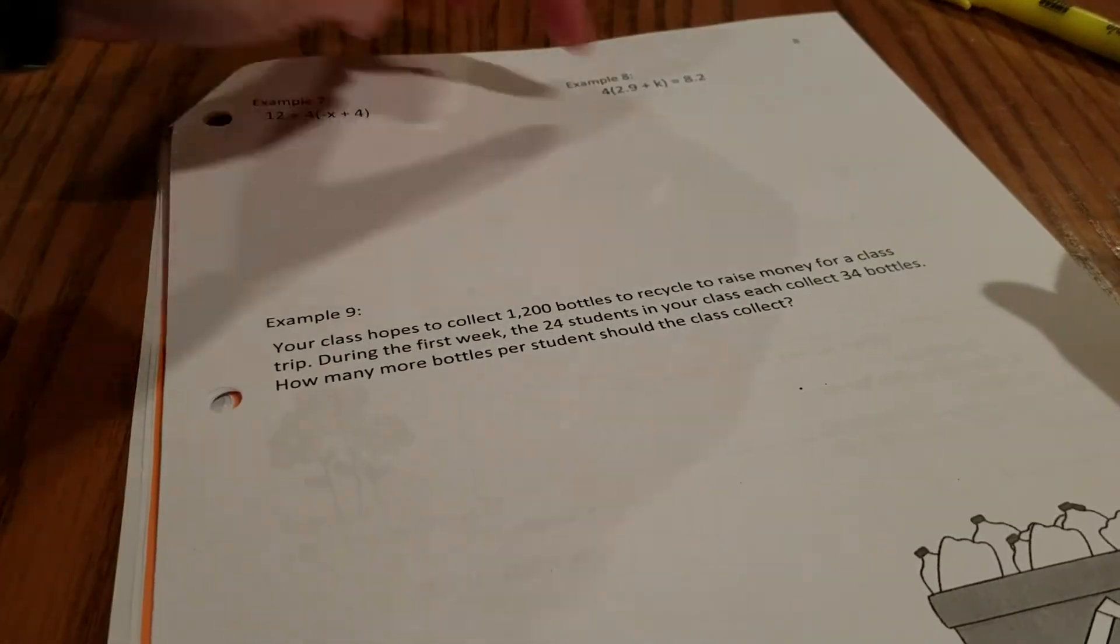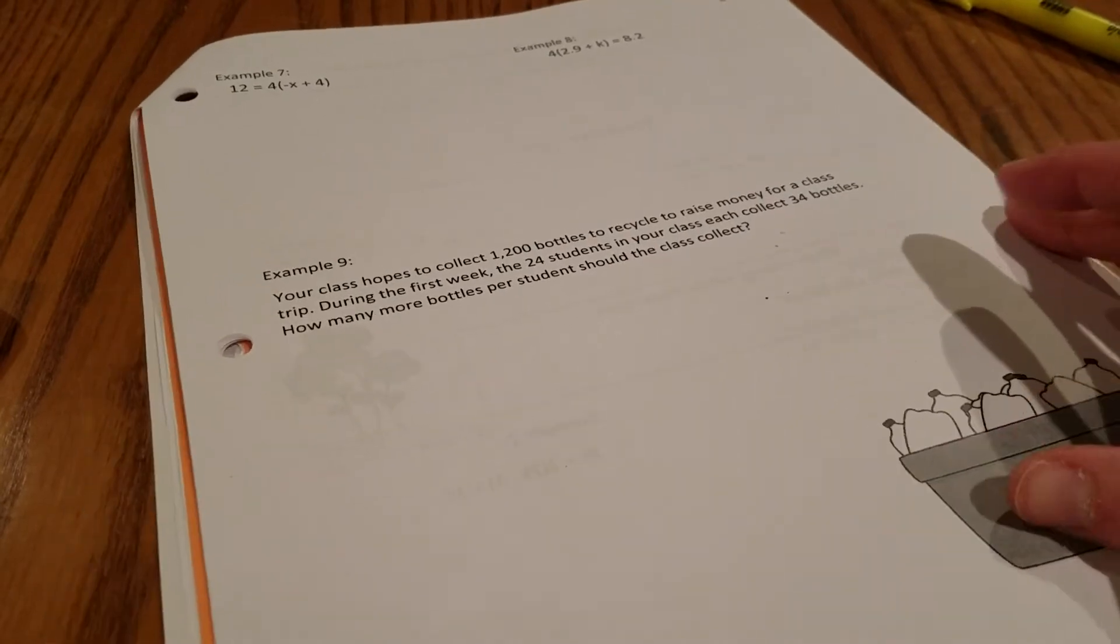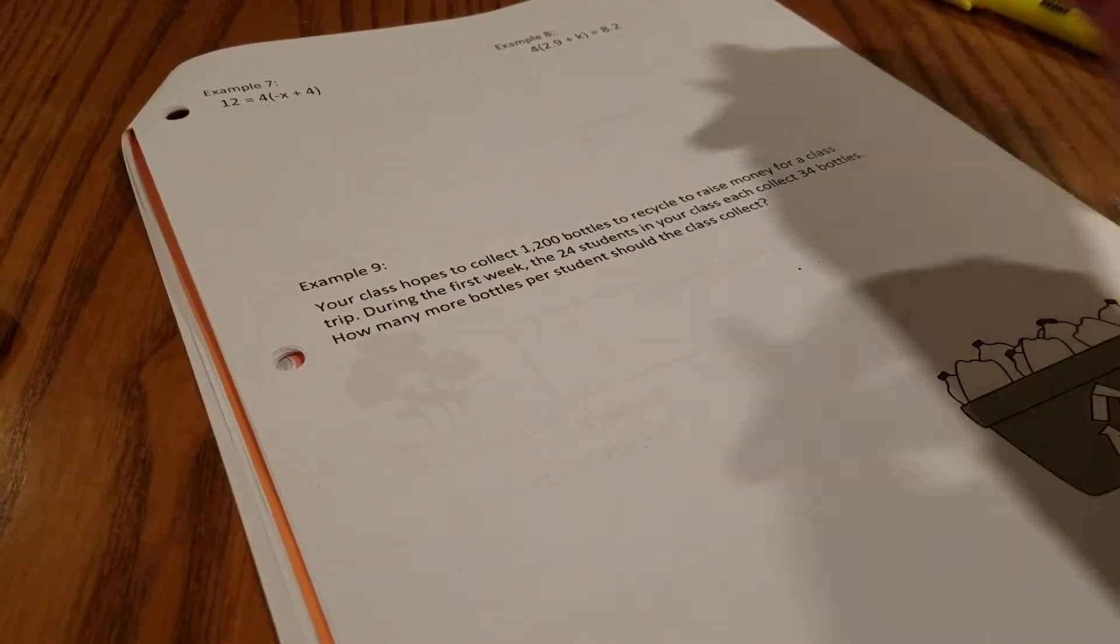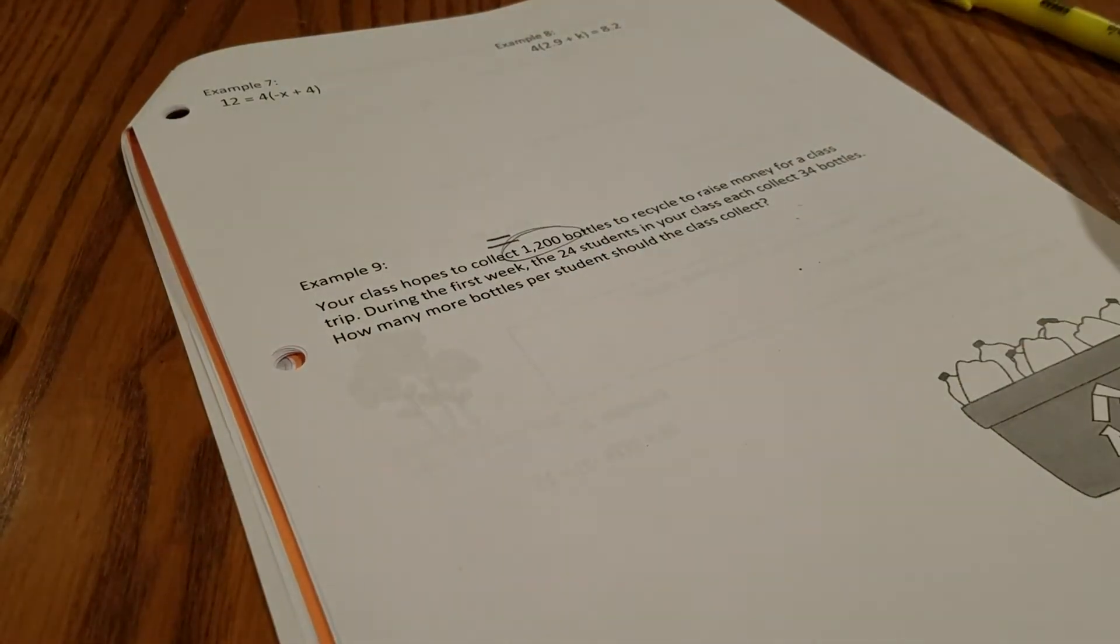You flip it over to the back side. There's two more up here if you'd like to try them. I'm going to jump down here to example 9. Your class hopes to collect 1,200 bottles to recycle to raise money for a class. This is your end goal, so that's your equals number right there.